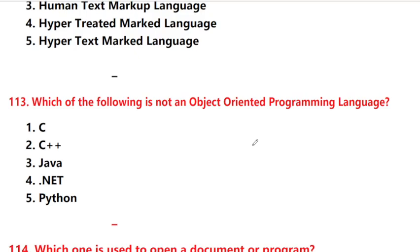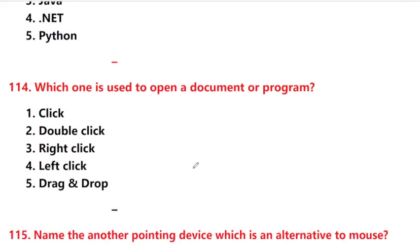Which of the following is not an object-oriented programming language? Answer is option 1: C. Which one is used to open a document or program? Answer is option 2: double-click.